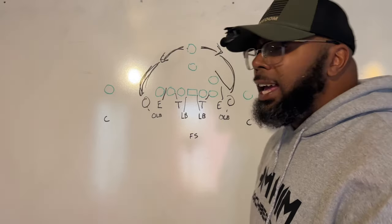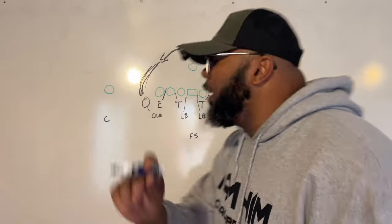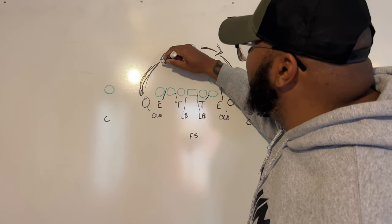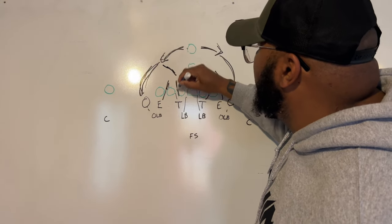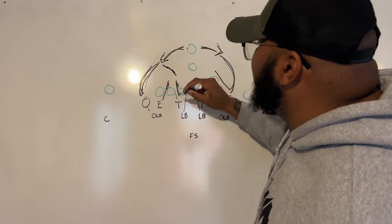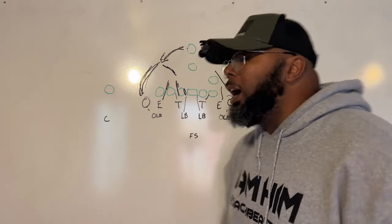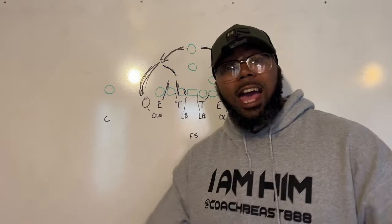If our outside linebacker is not able to make the tackle, that's okay. What we're trying to get him to do is bounce it back to the inside to our guys. Once he bounces back to the inside, we should be able to squirm to the ball, float to the ball, and have a great play.